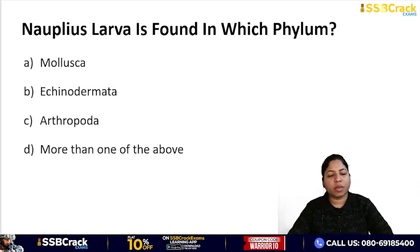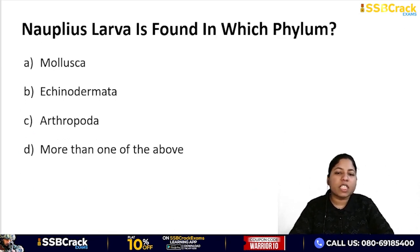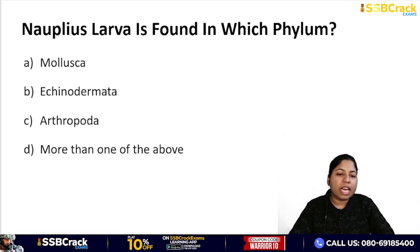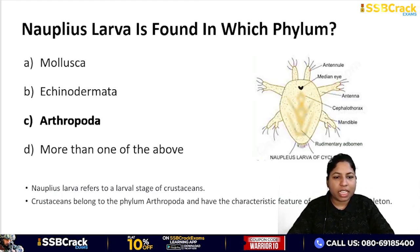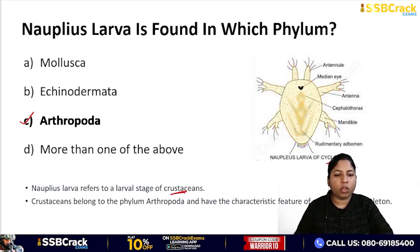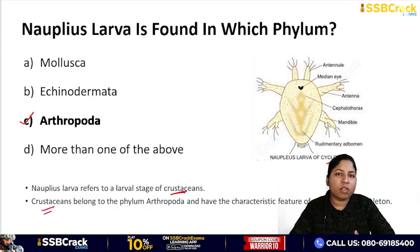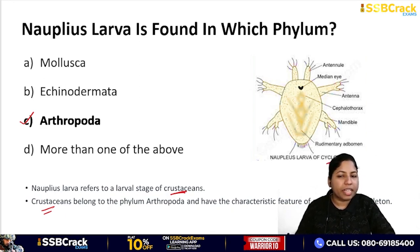Moving ahead to the next question: Nauplius larva is found in which phylum? Options are Mollusca, Echinodermata, Arthropoda, or more than one of the above. The correct answer is Arthropoda. Nauplius larva is the larval stage of crustaceans, which are present in phylum Arthropoda. Their exoskeleton is made of chitin.